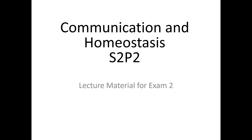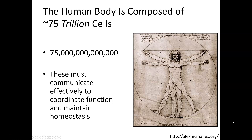This is material for the Lecture Exam 2, S2P2, Section 2, Part 2: Communication and Homeostasis. The best estimate of how many cells within the human body is about 75 trillion — that's trillion with a T. In order for the human body to operate optimally, these cells must effectively communicate with each other and coordinate function to maintain homeostasis, but also to have other normal body functions proceed.